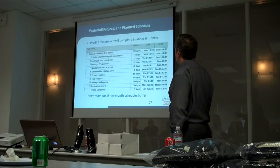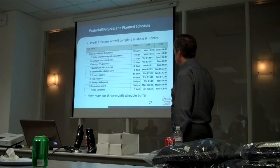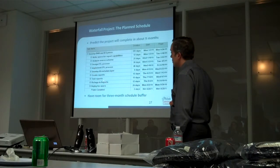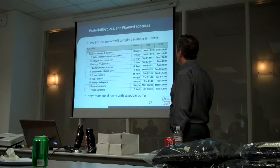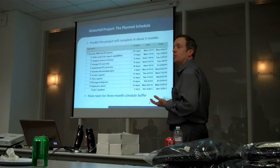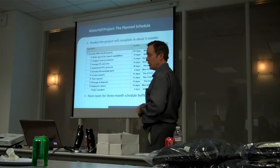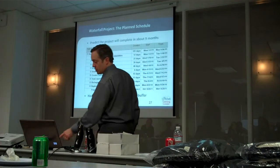Under 'Develop Data Warehouse and Business Intelligence System,' we have: write specs, reports, analyze the source schema, design, implement the ETL process, develop the business intelligence and data layer, create reports, test reports, fix bugs, deploy for users, project completed. Putting all the pieces together, it says it will take about nine months - which is great because we're funded for a year, so we've got a three-month schedule buffer.